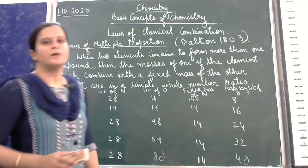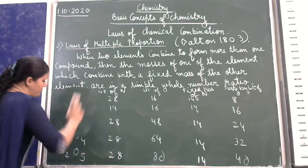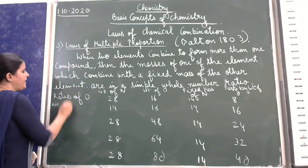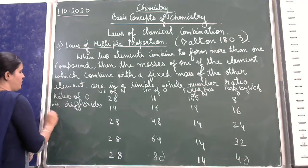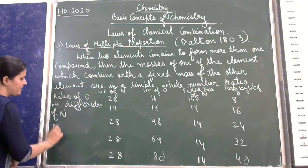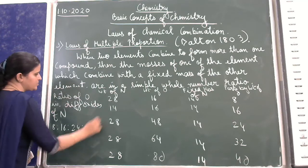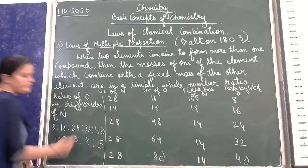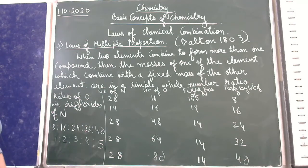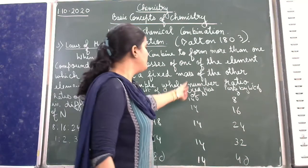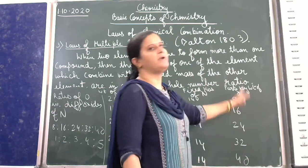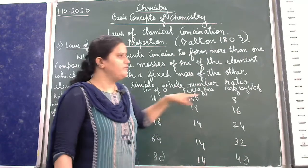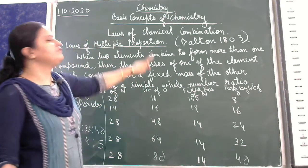So I am calculating the ratio of oxygen in the different oxides of nitrogen. The ratio is 8 to 16 to 24 to 32 to 40, which gives a ratio of 1 to 2 to 3 to 4 to 5. This is a simple whole number ratio — that is what the law of multiple proportion states. It is applicable when two elements form more than one compound.